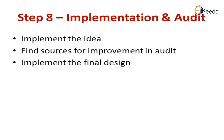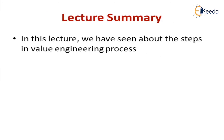So these are the eight steps. It's very simple. First, go for an analysis of the function and the requirement of the product. Just get ideas from the creative team. Make a ranking hierarchy based on value, cost, products, etc. Prepare a proposal model. By analyzing the various ideas, just present it and implement it. These are the eight steps in value engineering. In this lecture, we have seen what are the various steps in the value engineering process. Thank you.